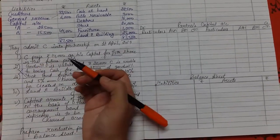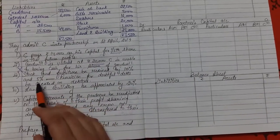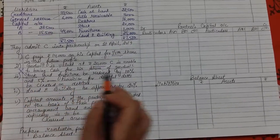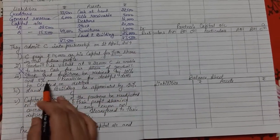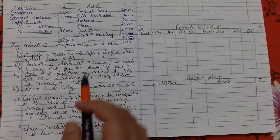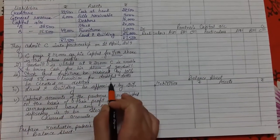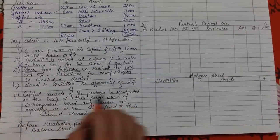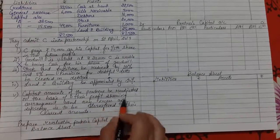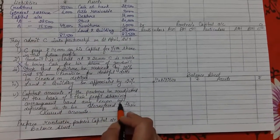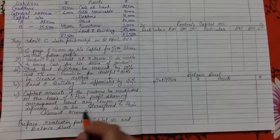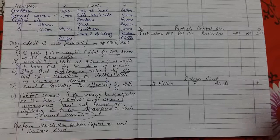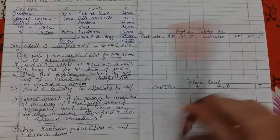Stock and furniture to be reduced by 10%. Both stock and furniture reduced by 10%, and 5% provision to be created on debtors. Land and building appreciate, meaning their value increases by 20%. Last, capital accounts of the partners to be readjusted on the basis of profit sharing arrangement and any excess or deficiency is to be transferred to their current account.